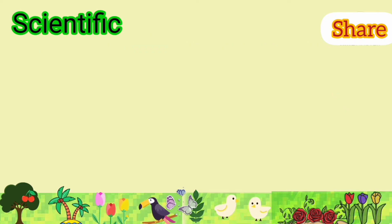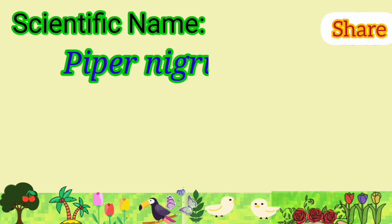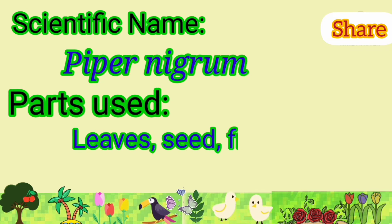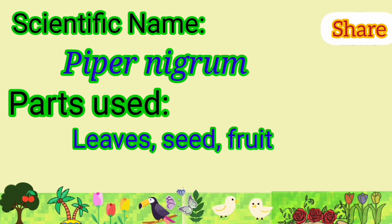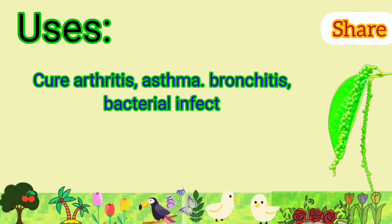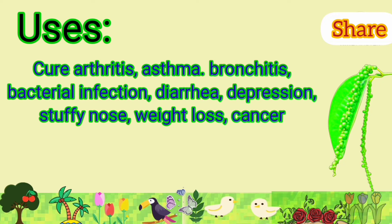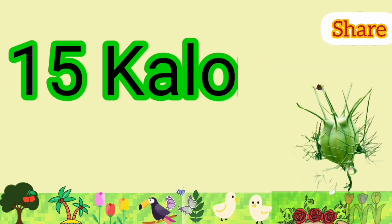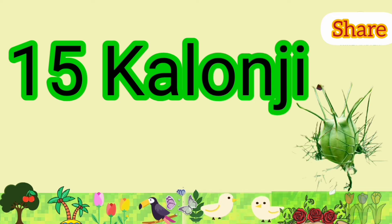Black Pepper: its scientific name is Piper nigrum. Parts used are leaves, seed, and fruit. It is used to cure arthritis, asthma, bronchitis, bacterial infection, diarrhea, and depression.